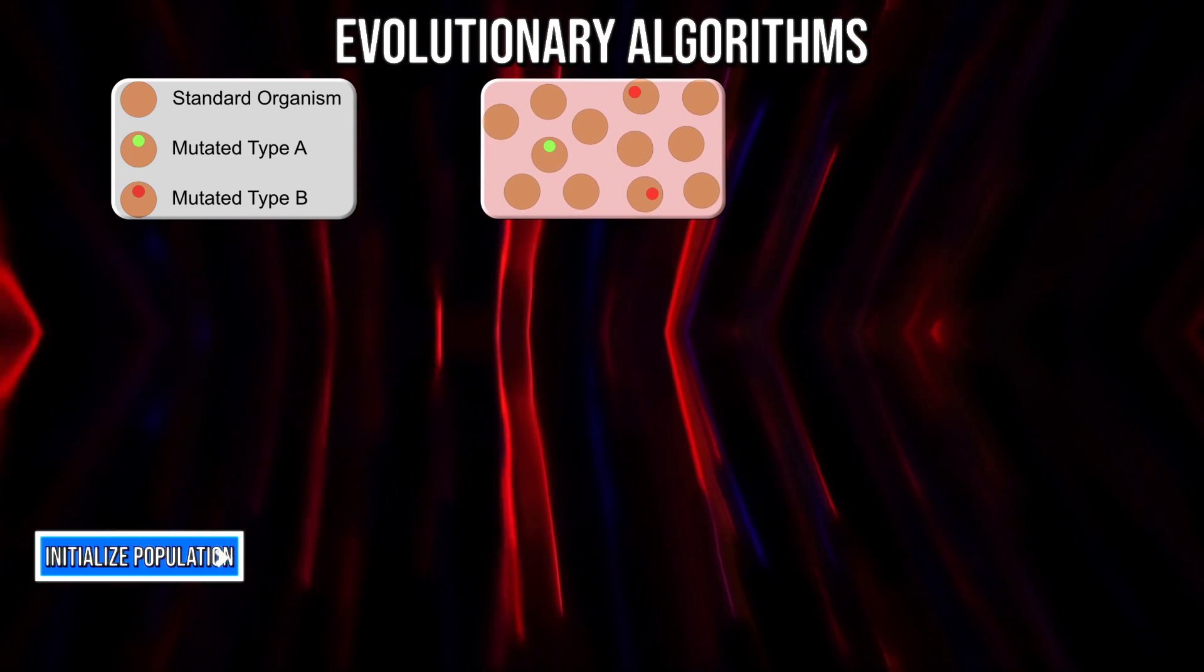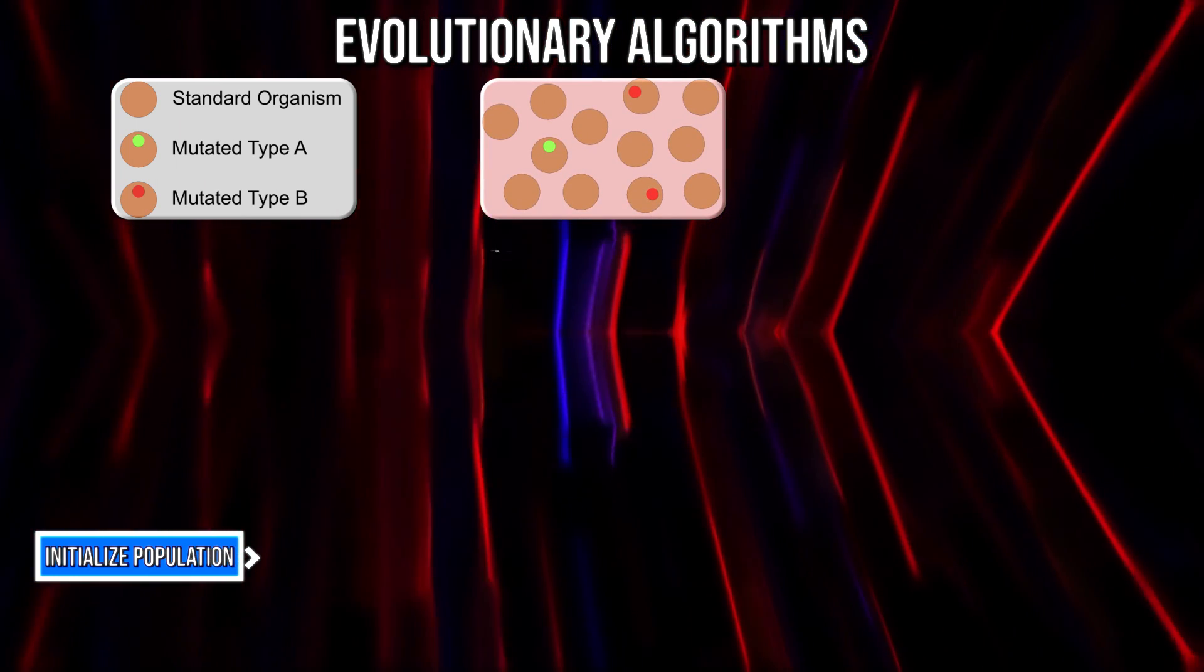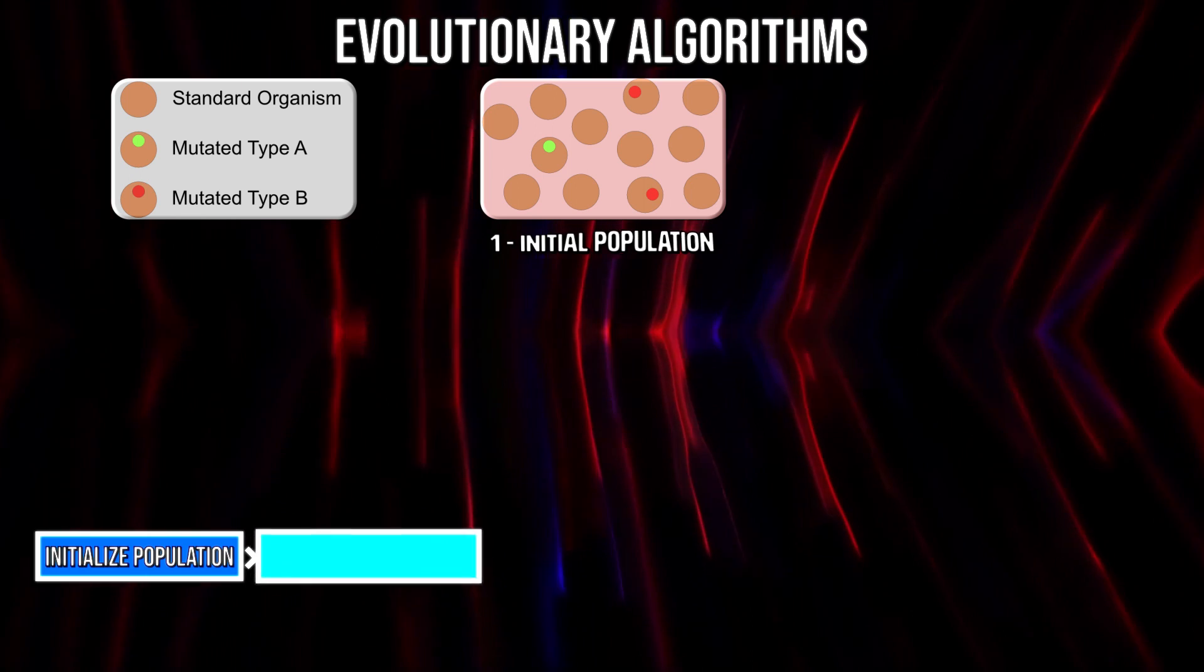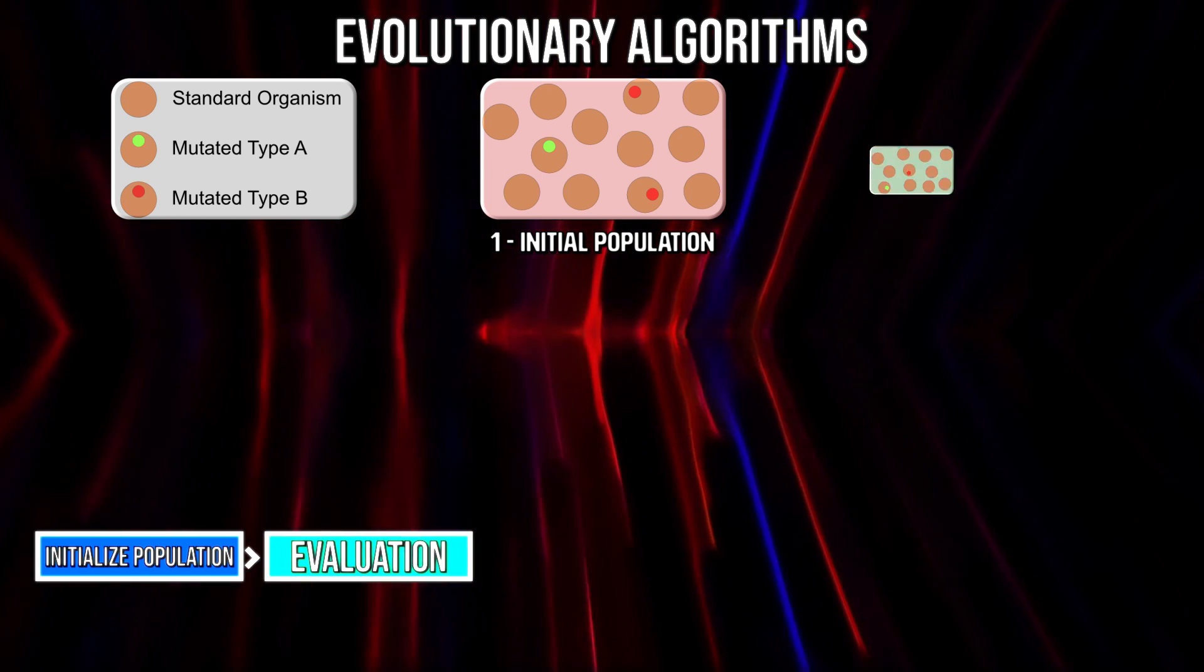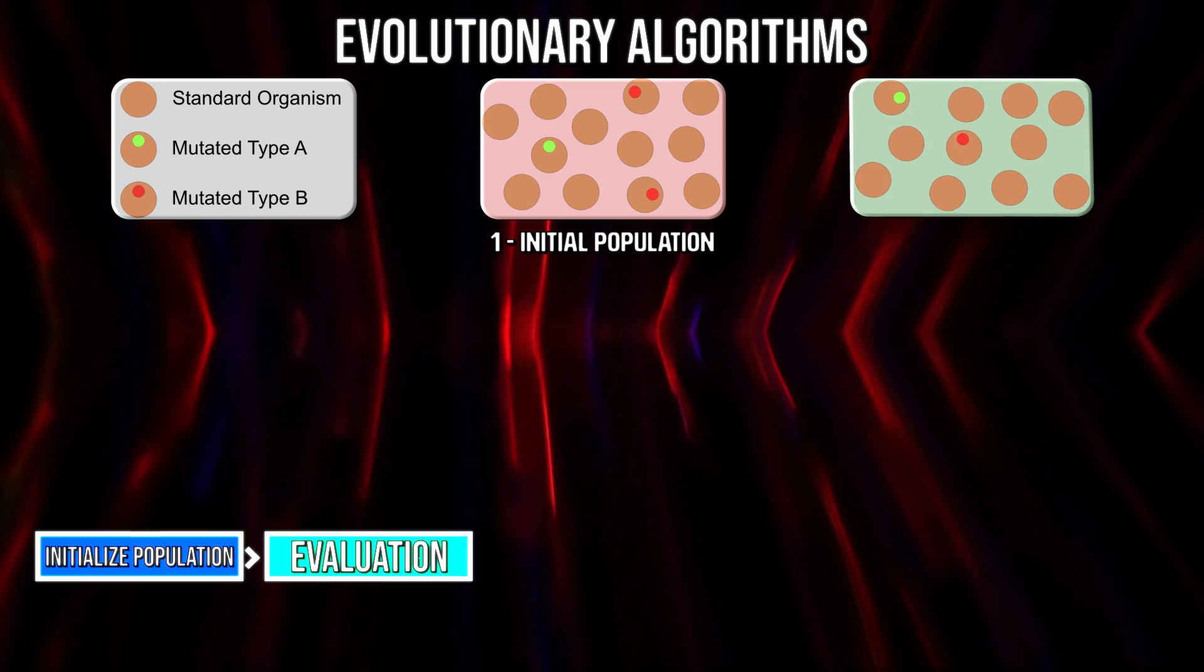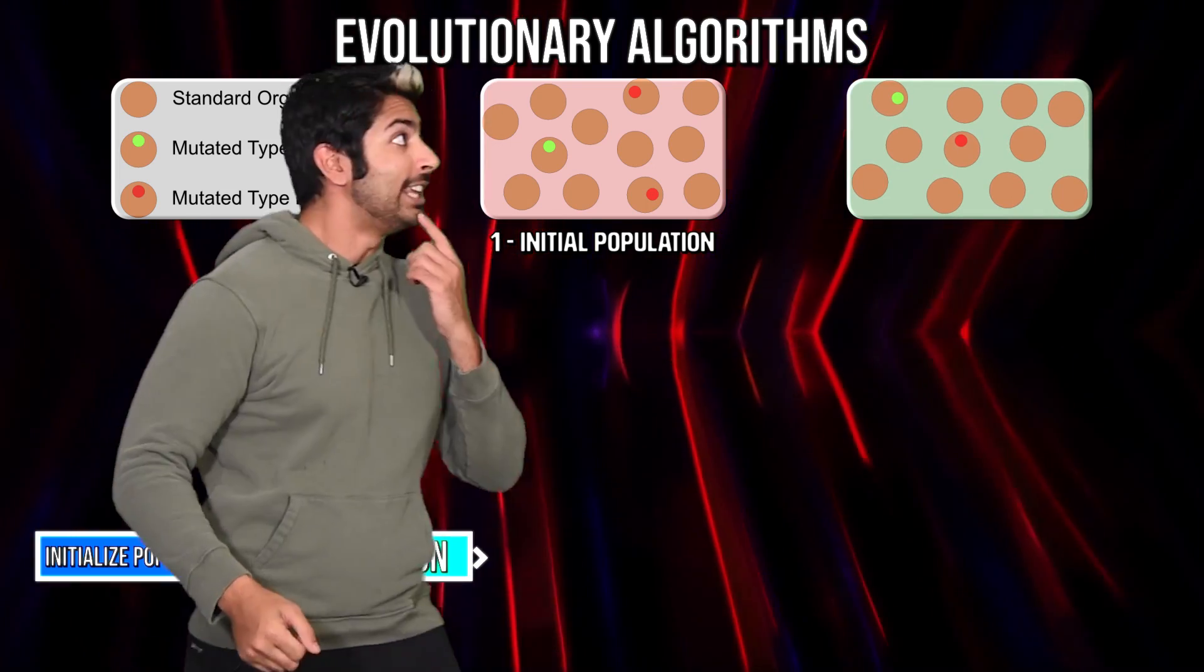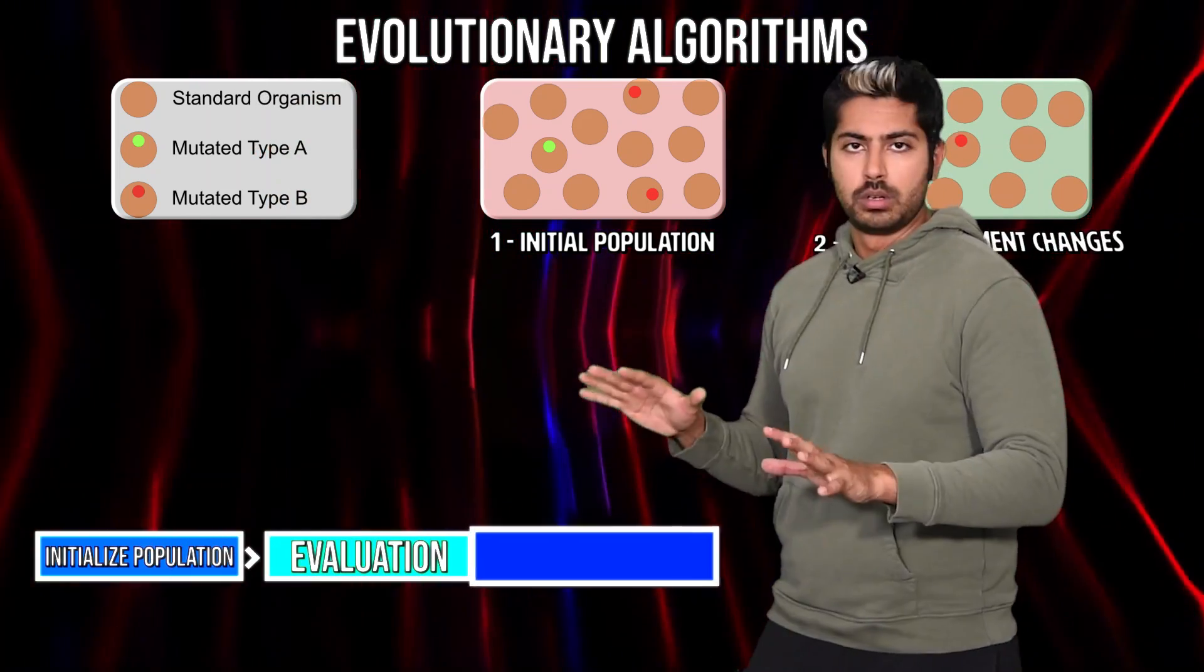This process is algorithmic, and we can simulate it on silicon processors by creating evolutionary algorithms. An evolutionary algorithm creates a population of randomly generated members. Each of these members are represented by some algorithm. It could be any kind, not just a machine learning algorithm.